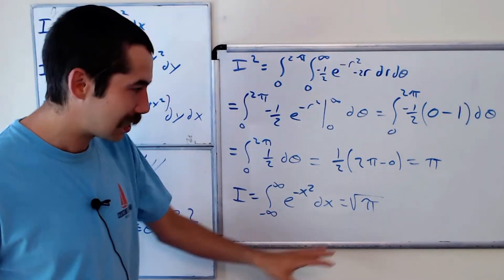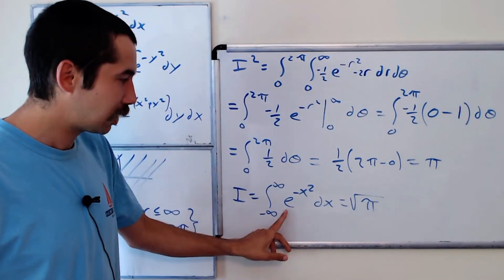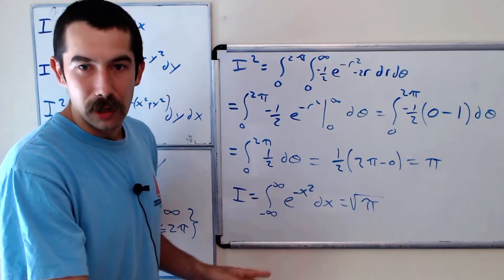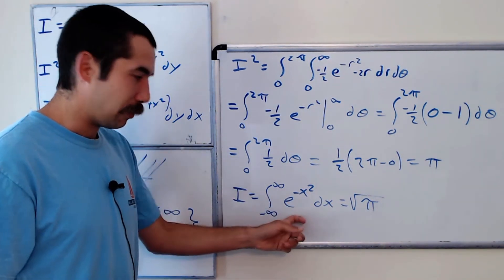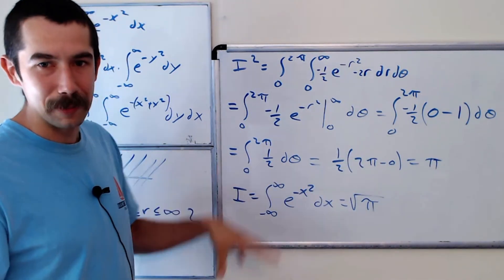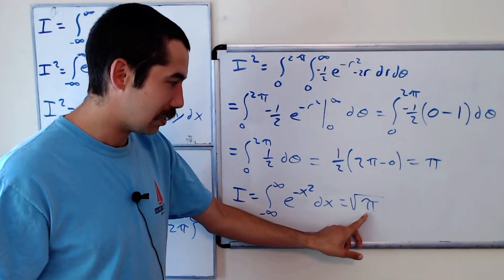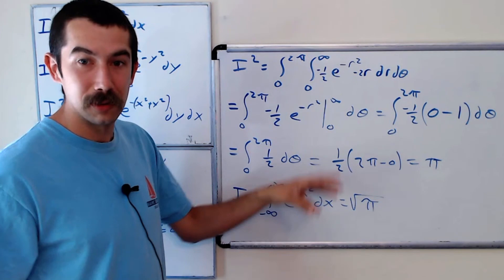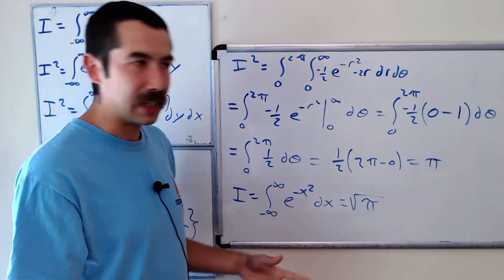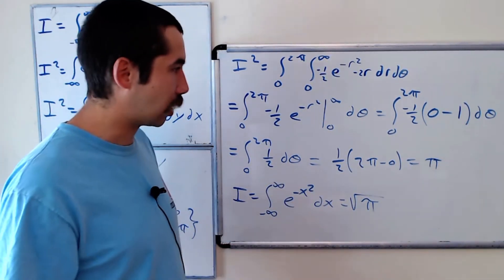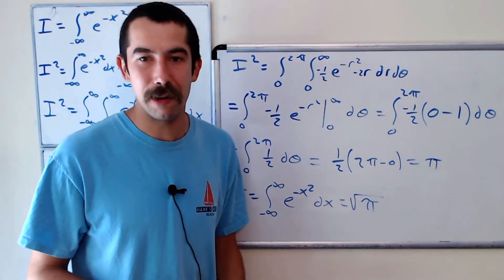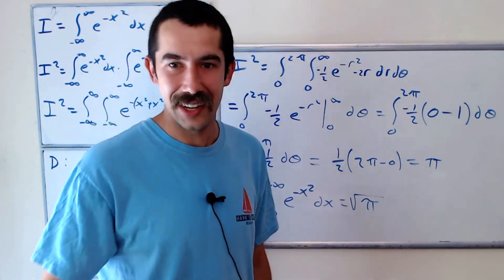Pretty neat! When do you see this? This function e to the negative x squared is like the bell curve. So if you ever take statistics and plot this, it's the bell curve function. The area under the bell curve is square root of pi, which is why we have to scale it by a factor of one over root pi if we want it to be a probability density function. Thanks for watching, and thank you Cookie Man for this great question — I hope you enjoyed it. See you later.